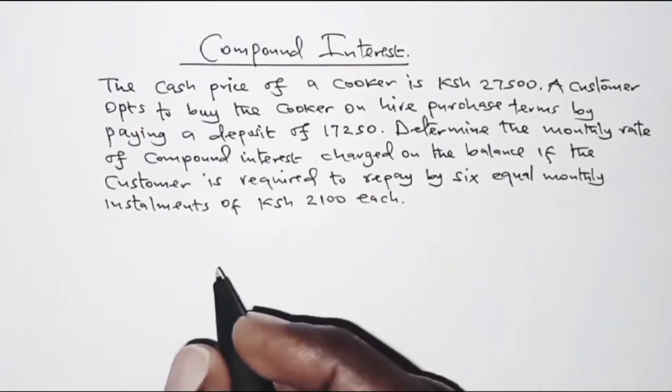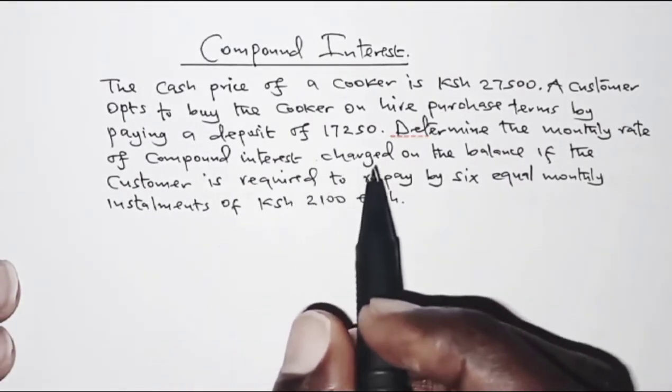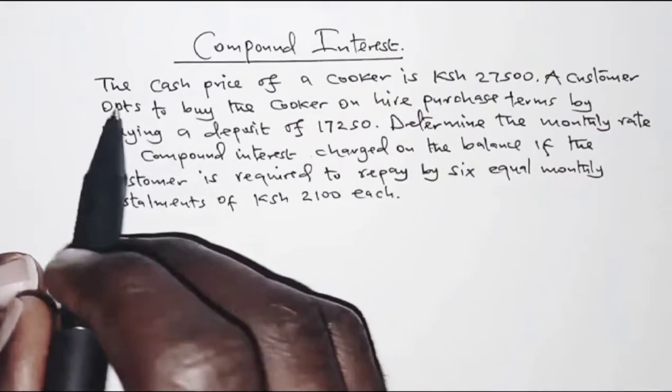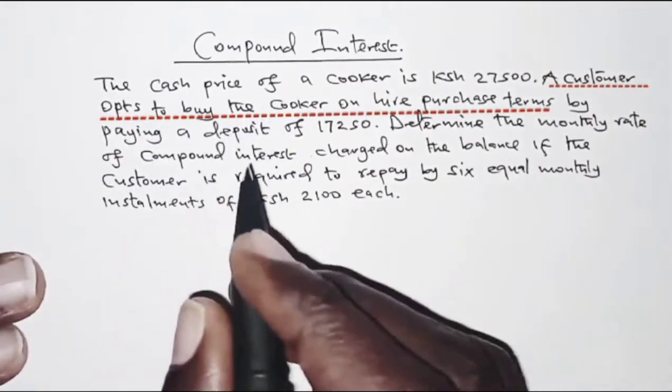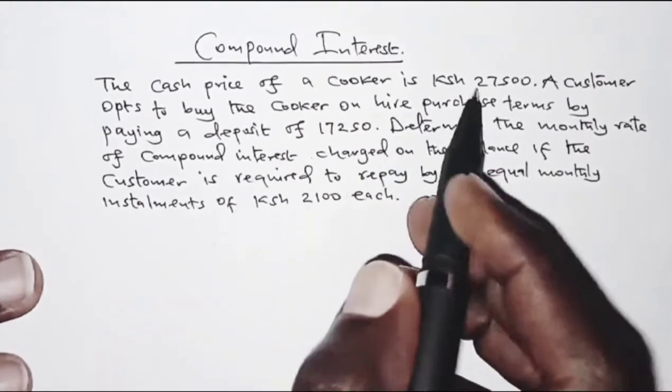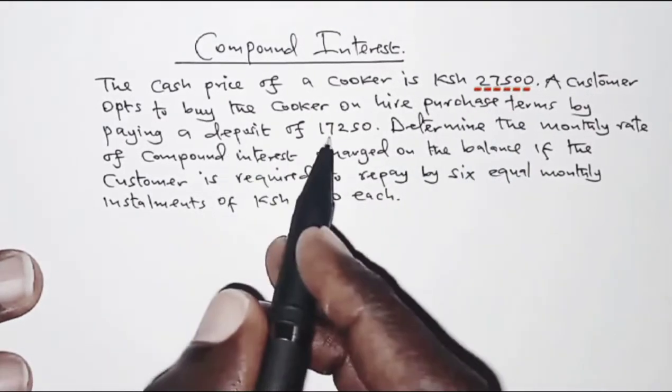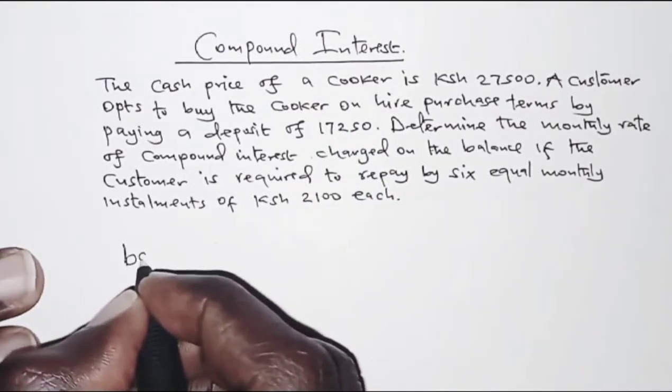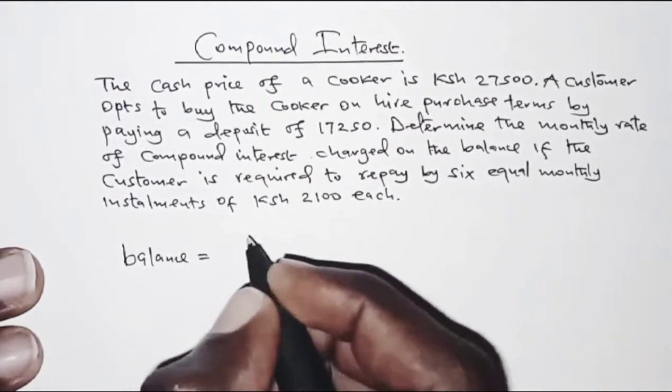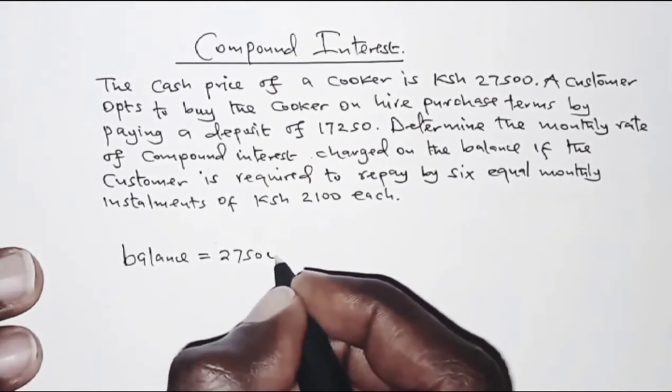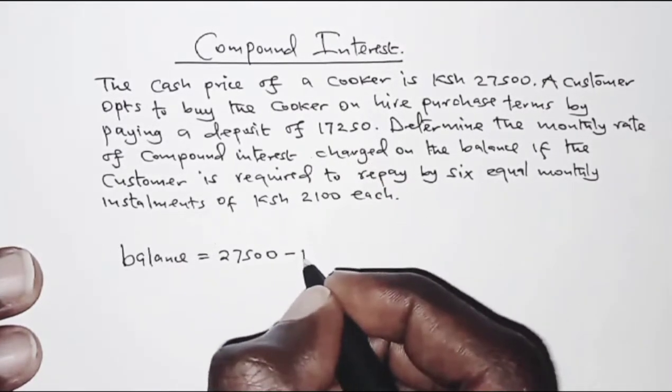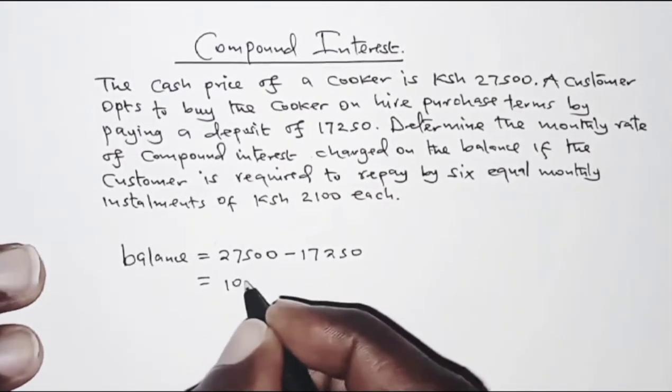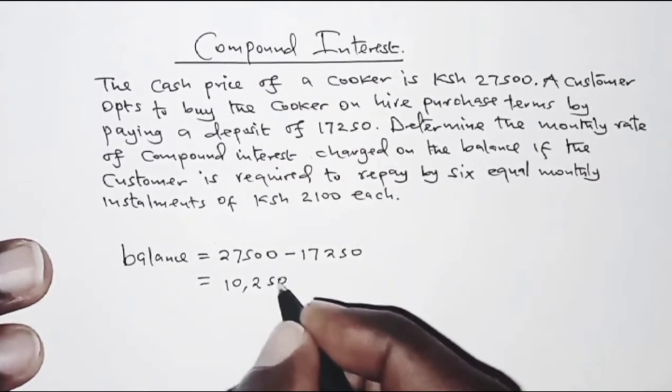So the first thing we are going to do is get the balance. Remember, we are required to get the rate of interest charged on the balance. So the customer opts to buy the cooker on hire purchase terms. Instead of paying 27,500, he deposits 17,250, so the balance is given by 27,500 minus 17,250, and that is 10,250 shillings.